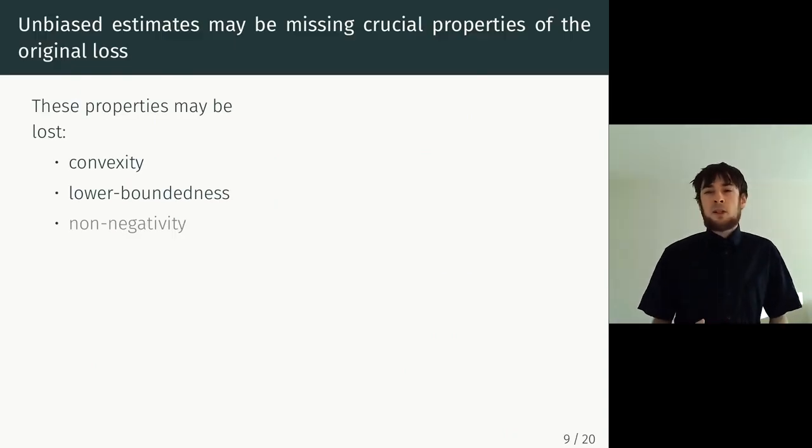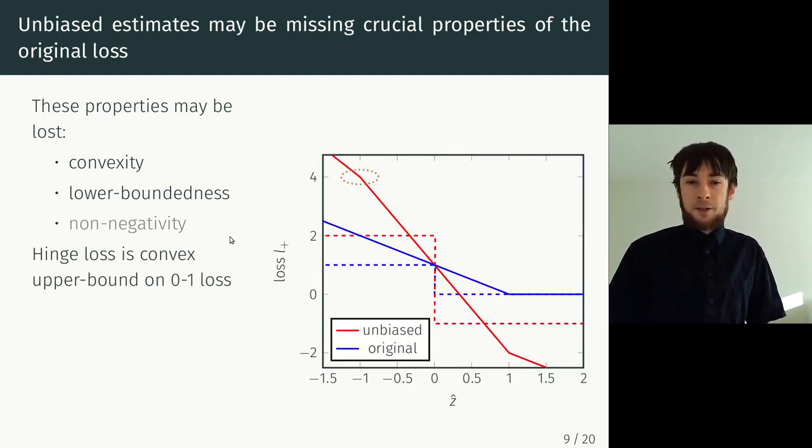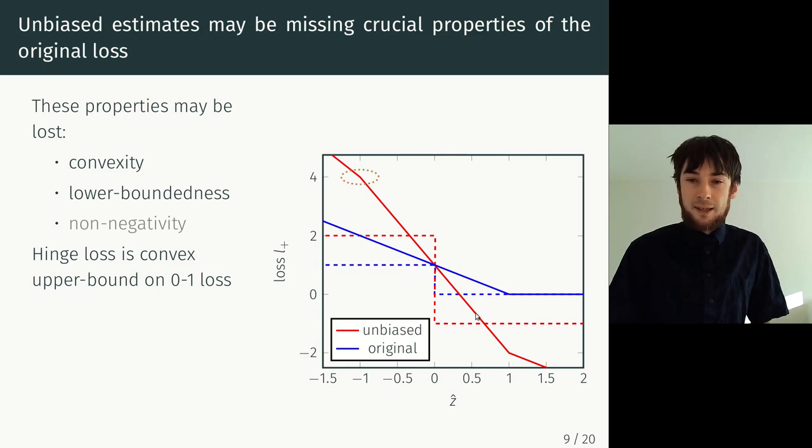So what properties do we want loss functions actually to have to be nice when we want to optimize them? Well, lower boundedness, obviously, so that there is a minimum, but also from an optimization perspective, it is nice to have a convex loss function. For interpretability, it would also be nice if the loss function was non-negative, even though that's not quite as important as the other two properties. Unfortunately, all of this is lost if we go to the unbiased setting in some cases. So for example, for the hinge loss, this solid red line is the unbiased estimate, and it is not convex because it has a kink here. It is not lower bounded, and it's not non-negative.